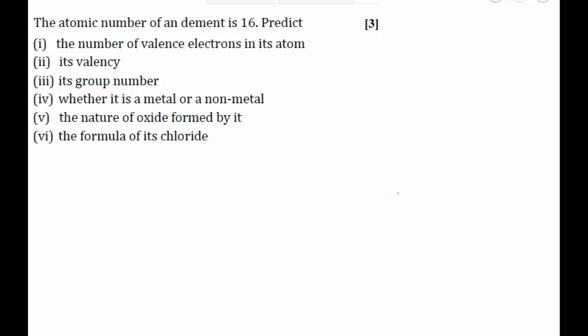In this question it is given that the atomic number of the element is equal to 16. We have to predict the number of valence electrons. To predict the number of valence electrons, we will write the electronic configuration of this element.